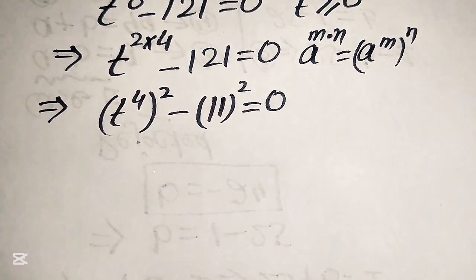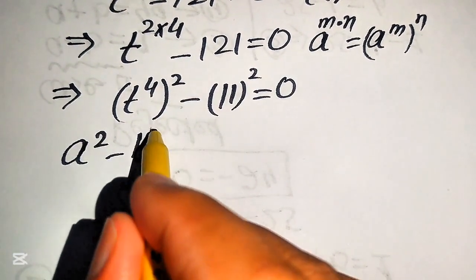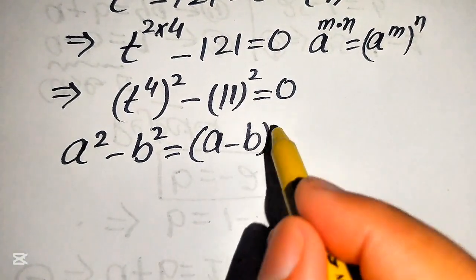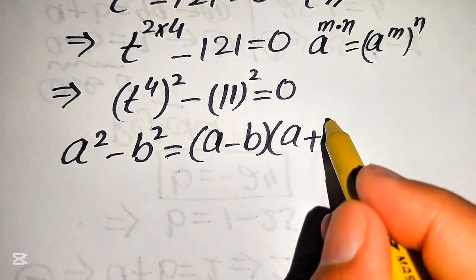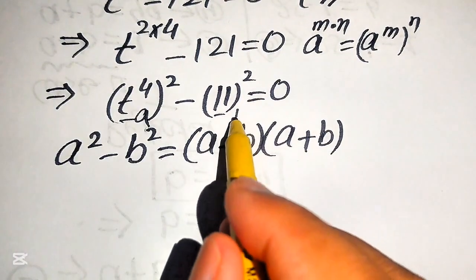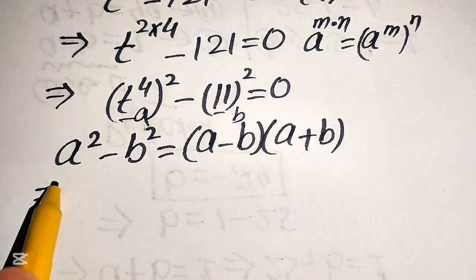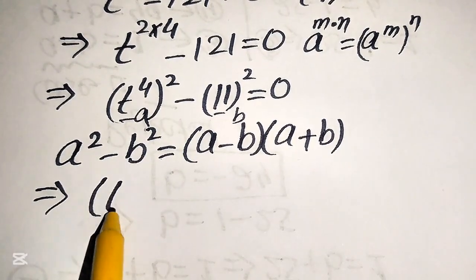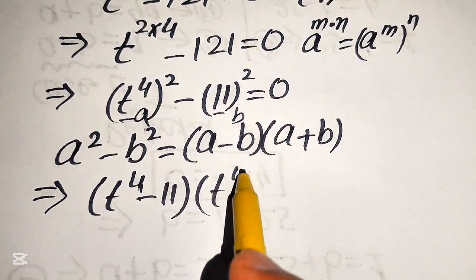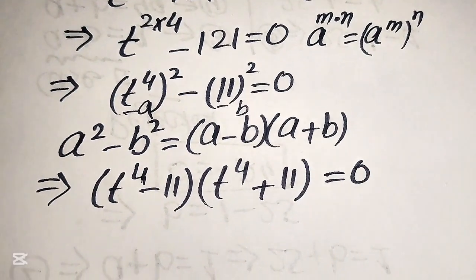In the next step we use the algebraic difference of squares formula: a squared minus b squared equals (a minus b)(a plus b). Here the base t to the power of 4 is our a, and 11 is our b. Applying this formula, our equation becomes (t to the power of 4 minus 11)(t to the power of 4 plus 11) equals 0.